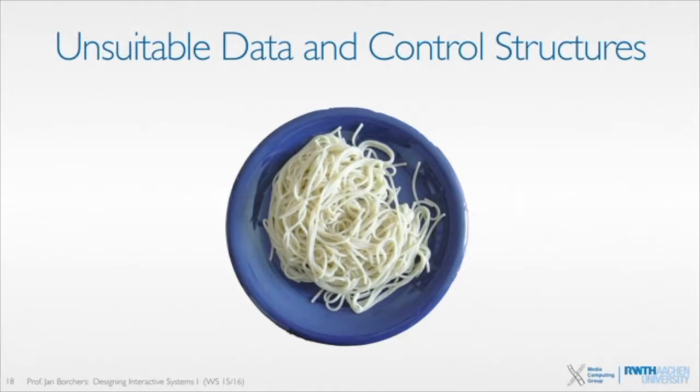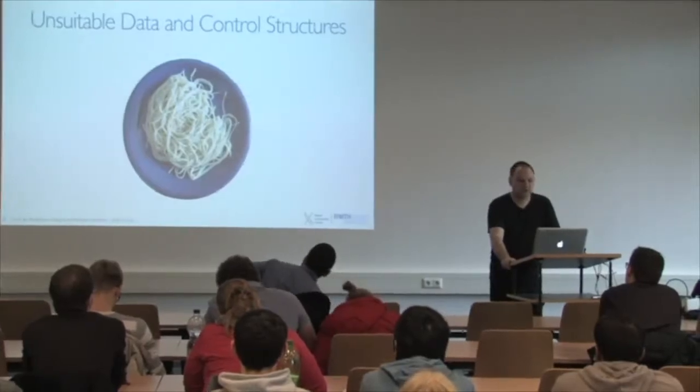Number four — and these five things came from a student who learned them while interning at Apple — are unsuitable data structures and unsuitable control structures, like iterating over large arrays where you'd rather use a hash map to get to your data much faster. Also, code inside a loop that is actually invariant and should be factored out, or nested loops that you should rather formulate as a SIMD — single-instruction, multiple data stream — implementation running on your vector unit. Those kinds of things often slow down code a lot.